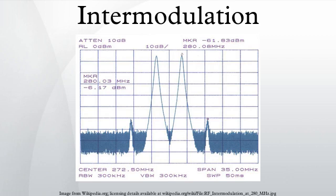Intermodulation or intermodulation distortion is the amplitude modulation of signals containing two or more different frequencies in a system with nonlinearities.